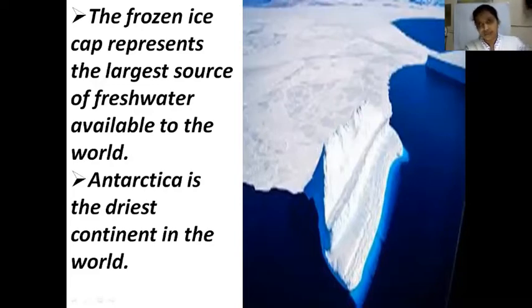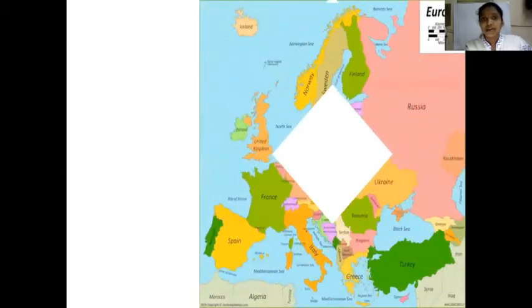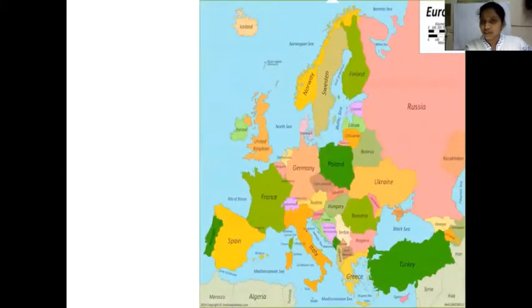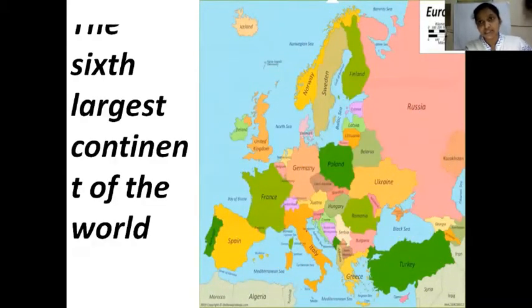The glacier flowed into the Atlantic Ocean where the Titanic — the largest ship — was sailing, and it caused the ship to sink. And the next continent we learn about is Europe. Europe is the sixth largest continent.